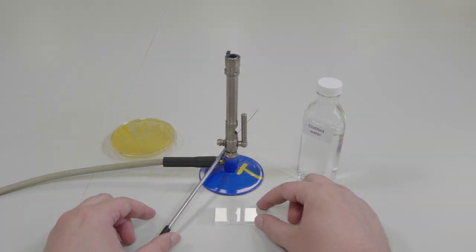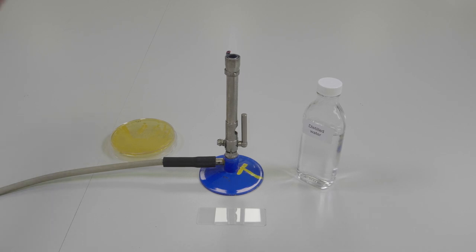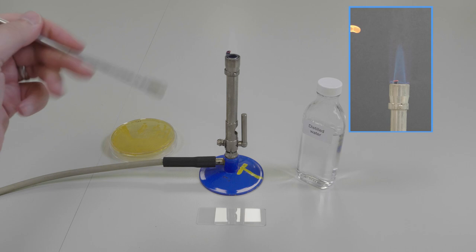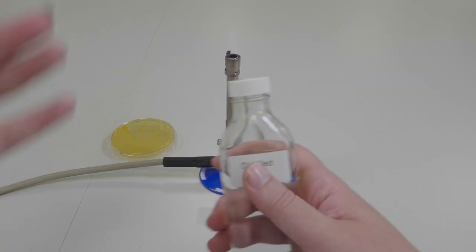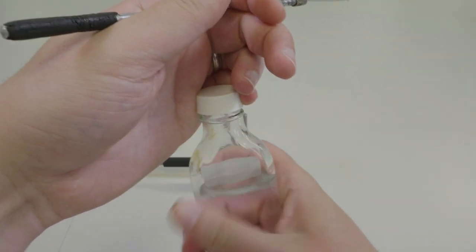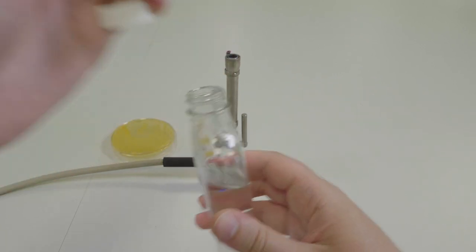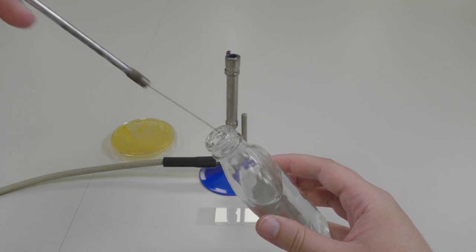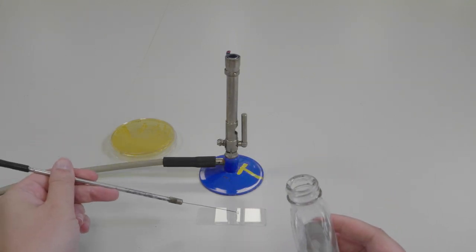Next take your inoculating loop and sterilize it. Take the lid off the distilled water using the little finger of your dominant hand, flame the neck of the water bottle and place three loopfuls of water onto your microscope slide.